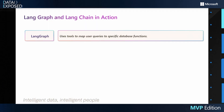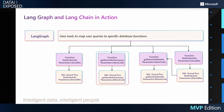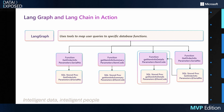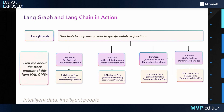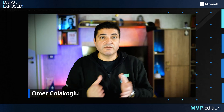LangGraph uses tools to map user queries to specific database functions. For example, GetItemInfoSummary retrieves a summary of raw material including stock levels and last purchase prices. GetOrderInfo retrieves details about orders based on serial numbers. GetItemInfoDetail provides a detailed purchasing history for specific items. This architecture ensures user queries are processed accurately and dynamically routed to the right tools. For example, when I ask 'tell me about the stock amount of this item with item code,' the system understands I want raw material summary info, decides to use GetItemInfoSummary, and passes the item code as a parameter. When I ask 'please tell me the lowest and highest prices of this item,' the system decides to use GetItemInfoDetail for transaction history. But how? We define it in the functions in a special format — just as a prompt.